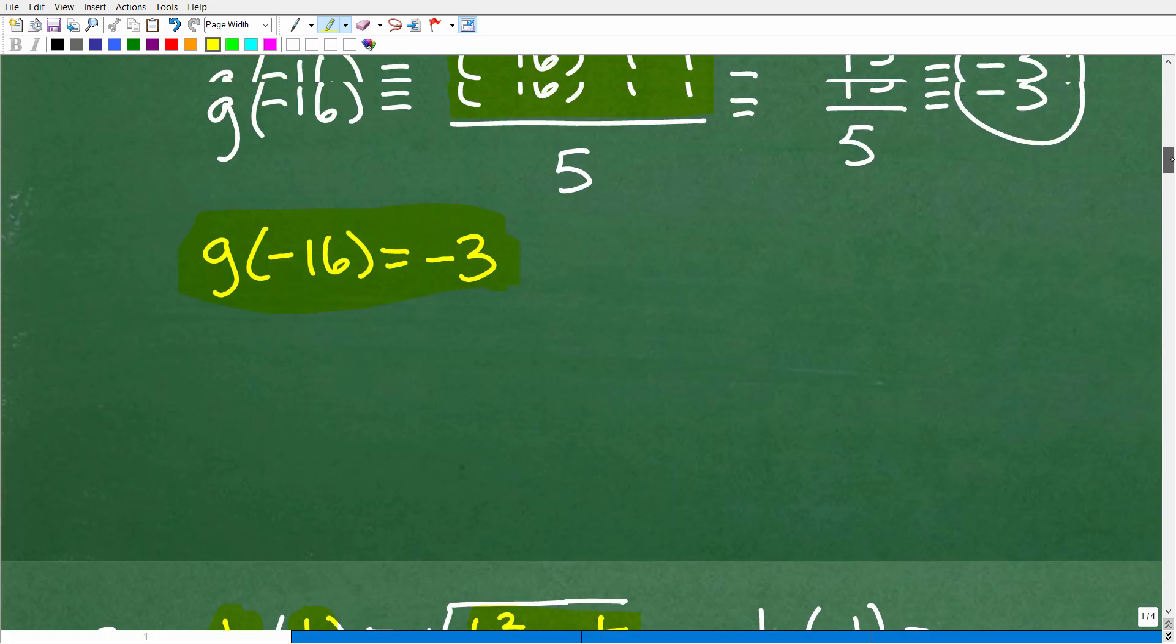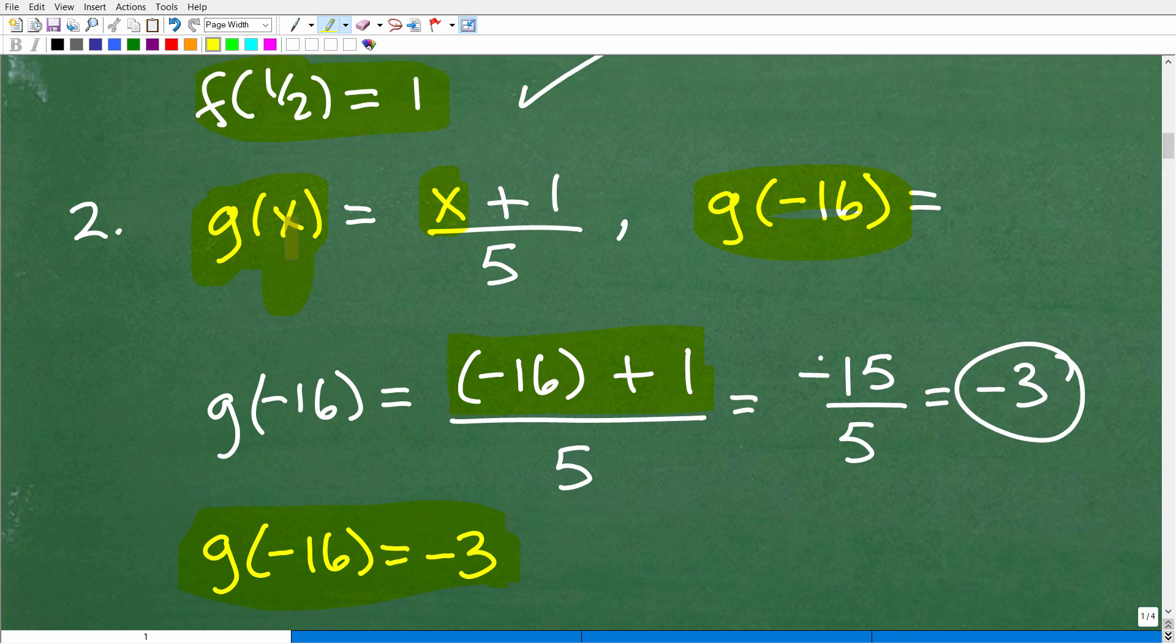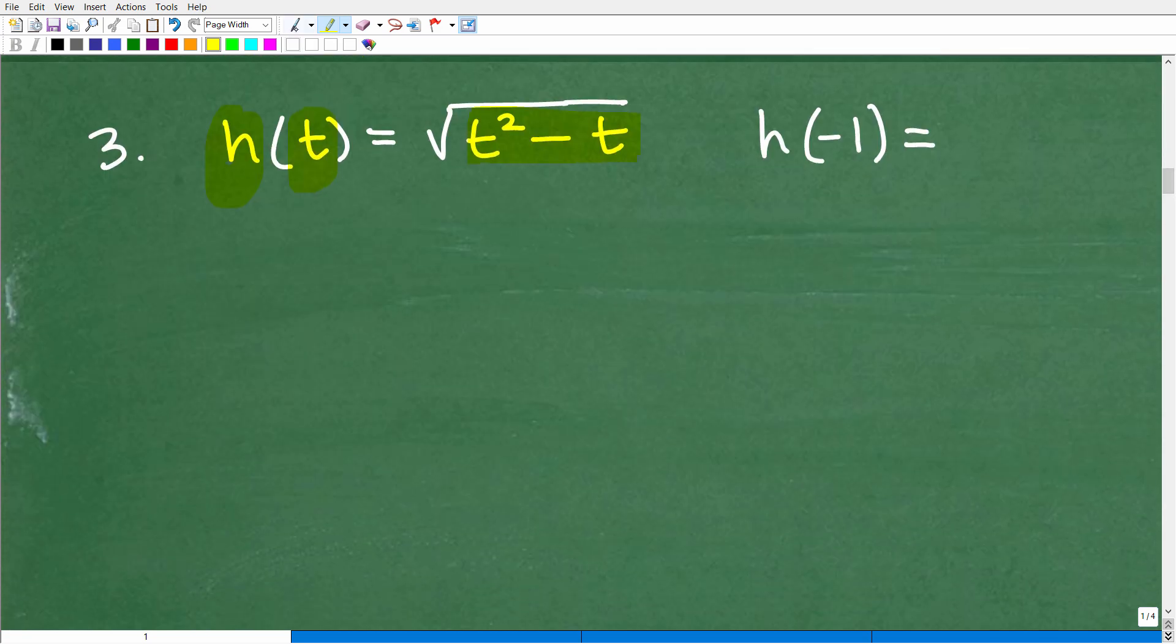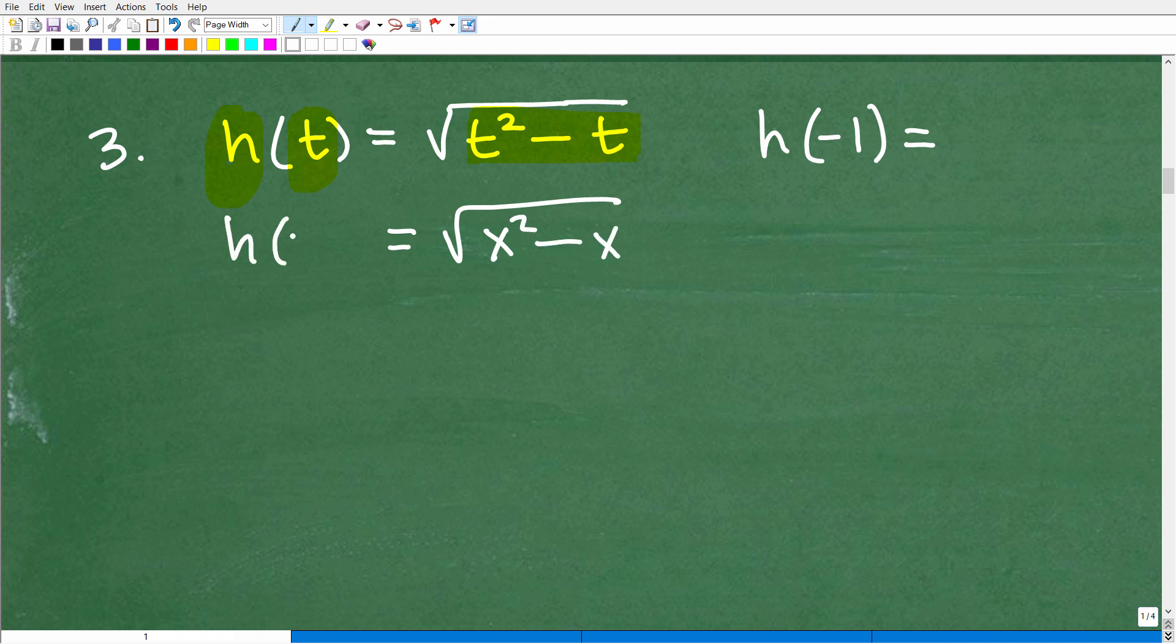Let's go back to the g function so we understand this. Notice I have an x there, so we use the x when we write out the function rule. Here, if I have h of t, you're not going to write this as the square root of x squared minus x. If you use the x variable, you have to use the x in the function. So just make sure you understand that because if you're watching this video, chances are you're just still learning about functions.